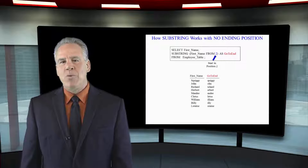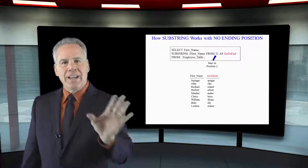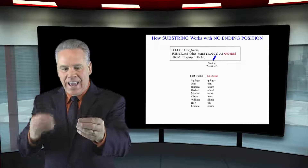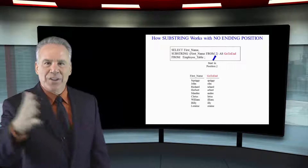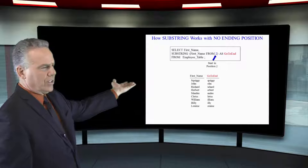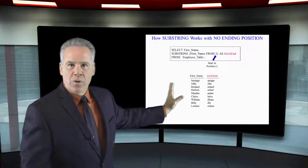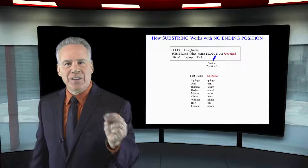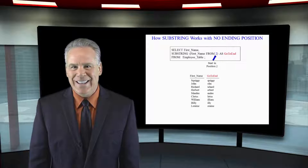I want you to remember that the substring command will count. Here we're saying substring first name from two, but where's the number of positions to count? There is none. So it's going to default to the end of the string.